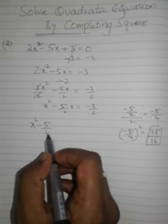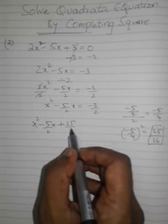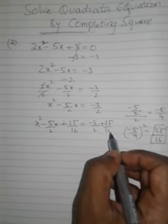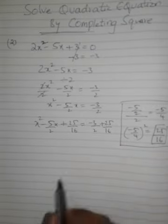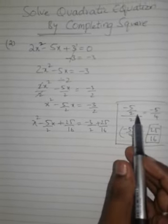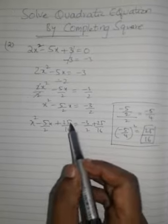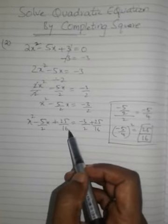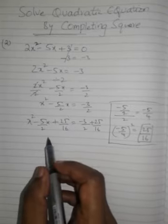So it is x square minus 5 by 2x plus 25 by 16 equals to minus 3 by 2 plus 25 by 16. Remember we are adding the square of minus square of the coefficient which we got as half of the square 25 by 16 to both sides to make it a complete square.